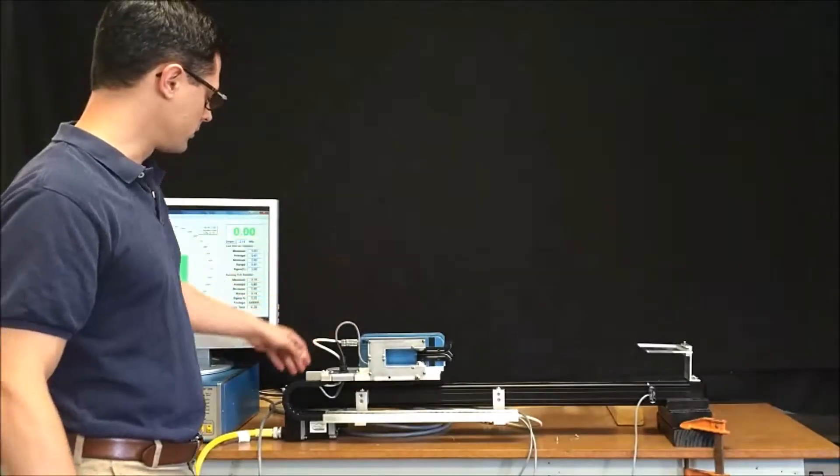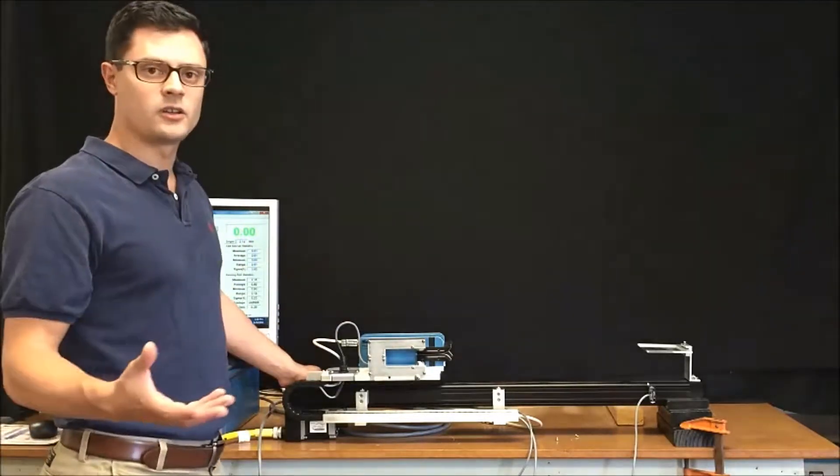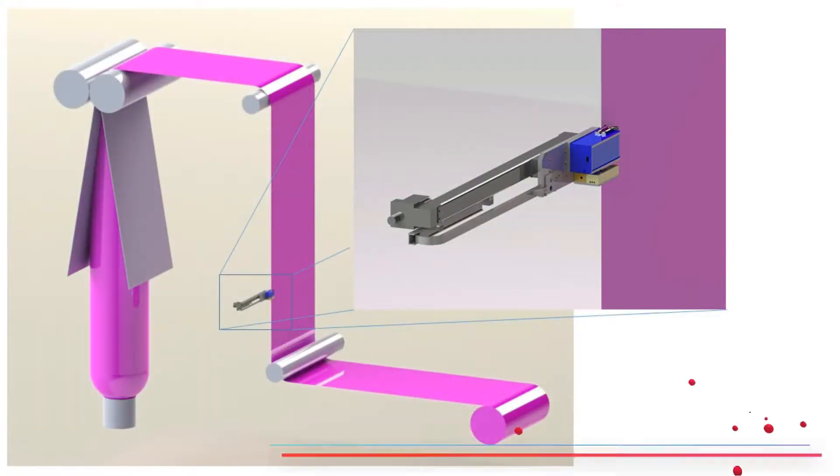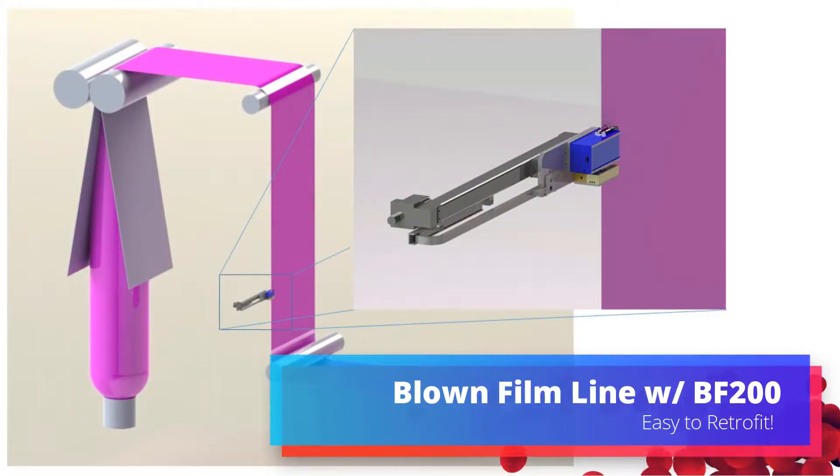These items are mounted onto a slide which is mounted onto the production line after the lay flat. So here you can see a BF200 mounted on the lay flat on the blown film line.